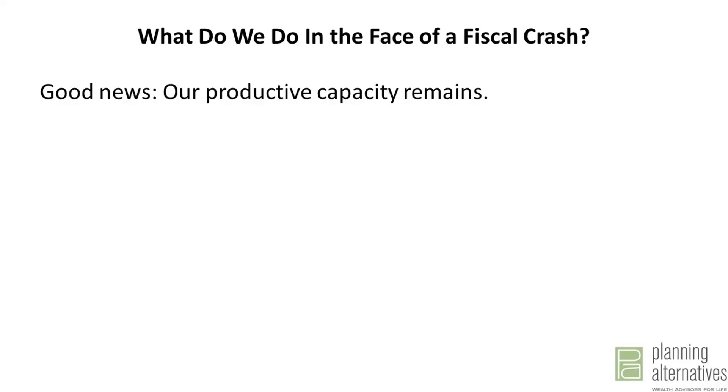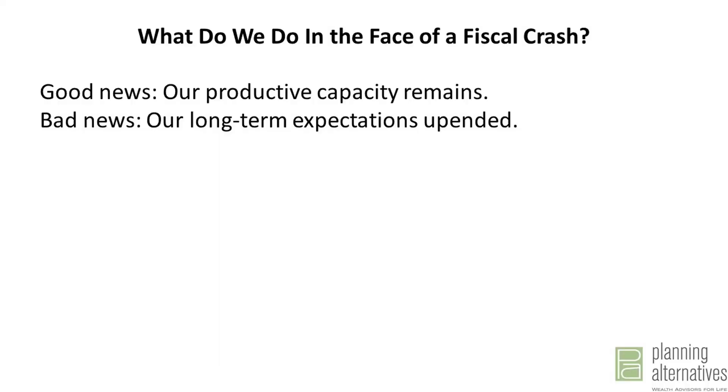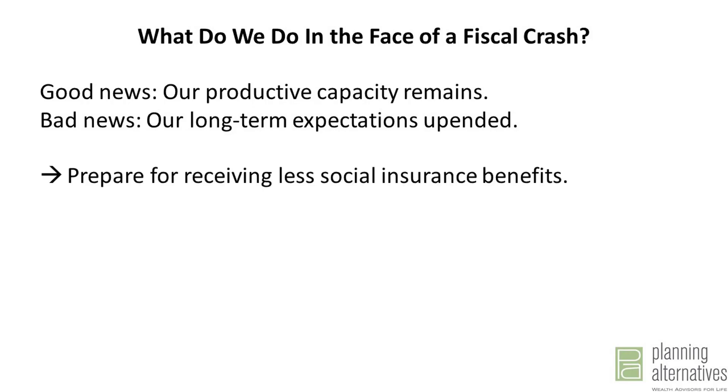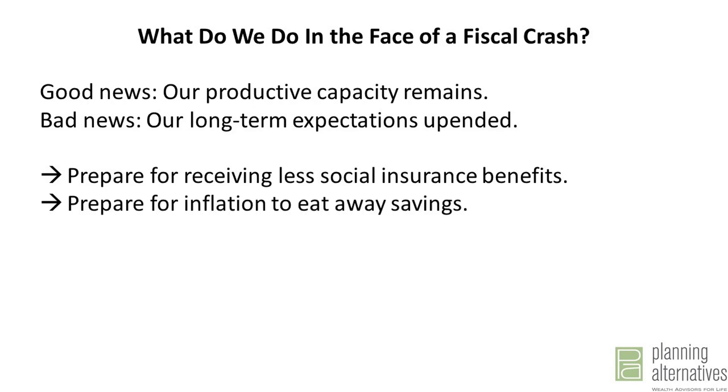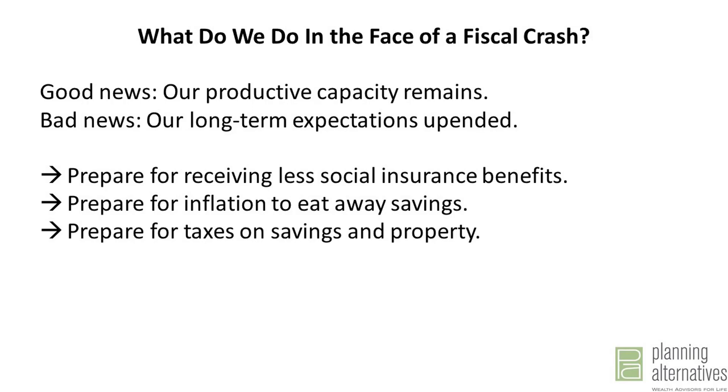So what do we do in the face of this coming fiscal crash? The good news is our productive capacity remains — our factories, our workforce, our intelligence, our technology: none of those things disappear. The bad news is our long-term expectations are upended. We must take steps to prepare for receiving less social insurance benefits than the government promises, be prepared for inflation to eat away our savings, and prepare for taxes on our savings and our property. All of that spells the need for careful investment planning. While these three harms may be unavoidable, careful investment planning can mitigate the pain they cause.